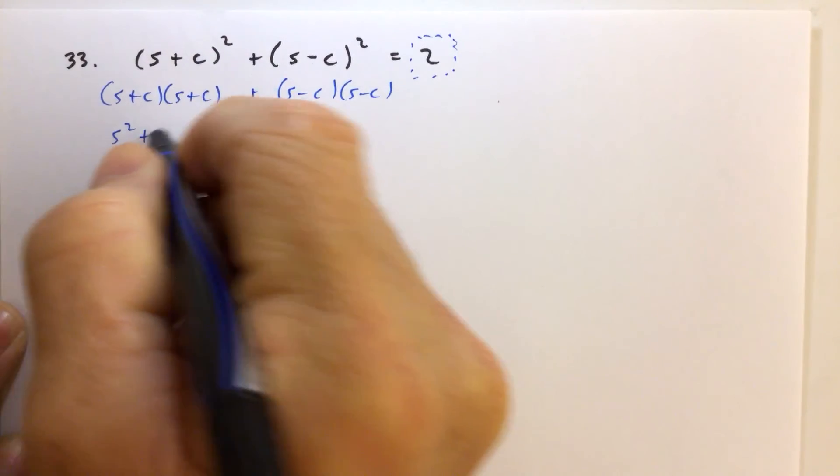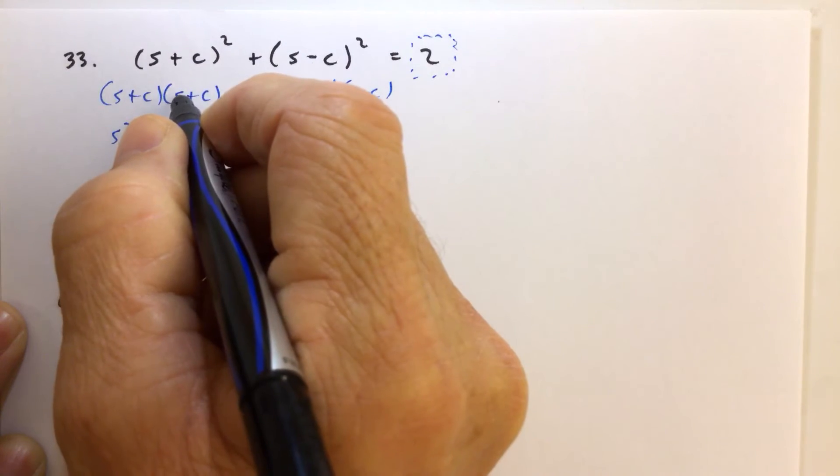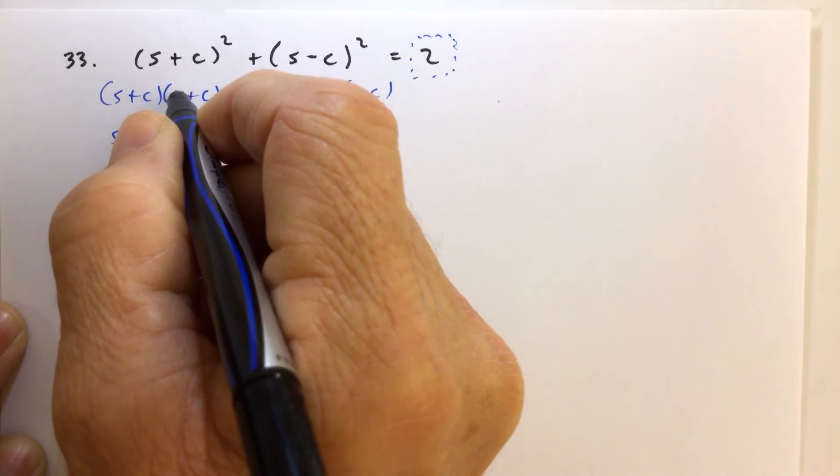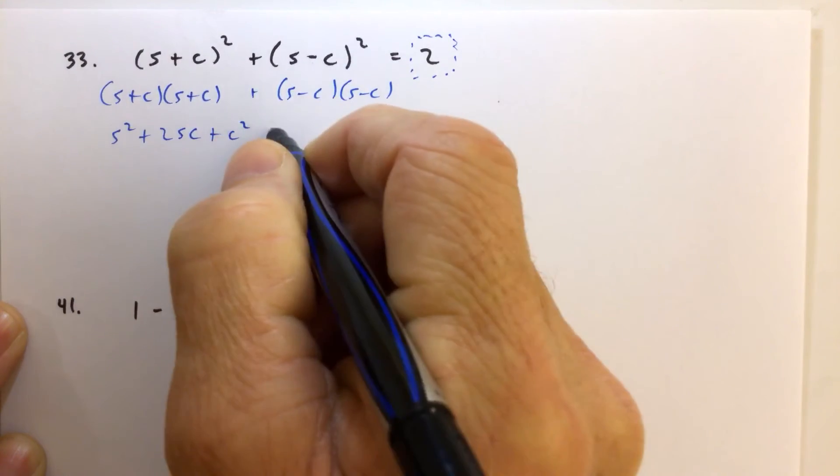So that's s squared plus sc plus another cs. So sc plus sc—cs is the same as sc. There's 2sc plus c squared, plus.